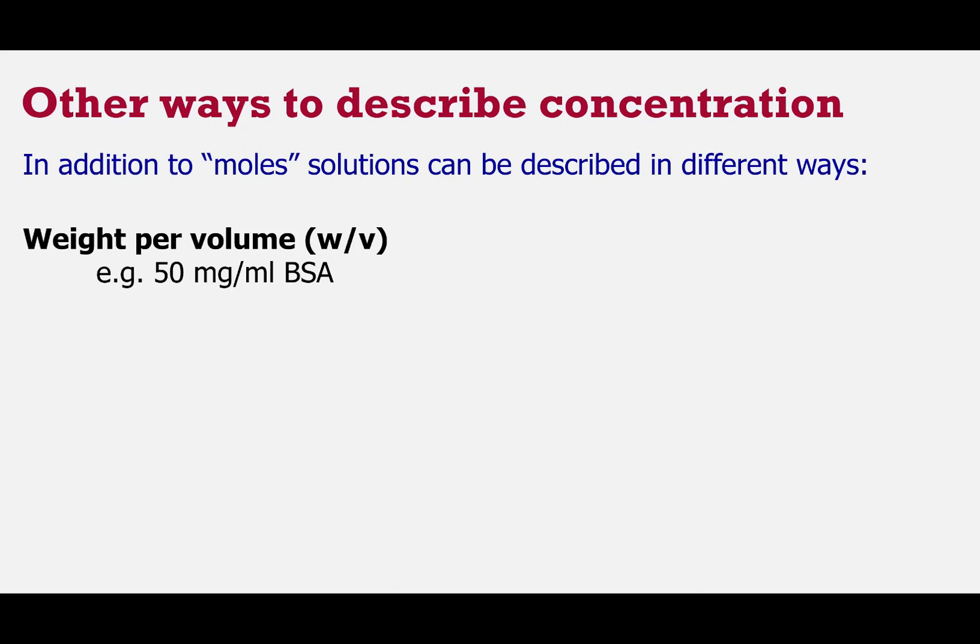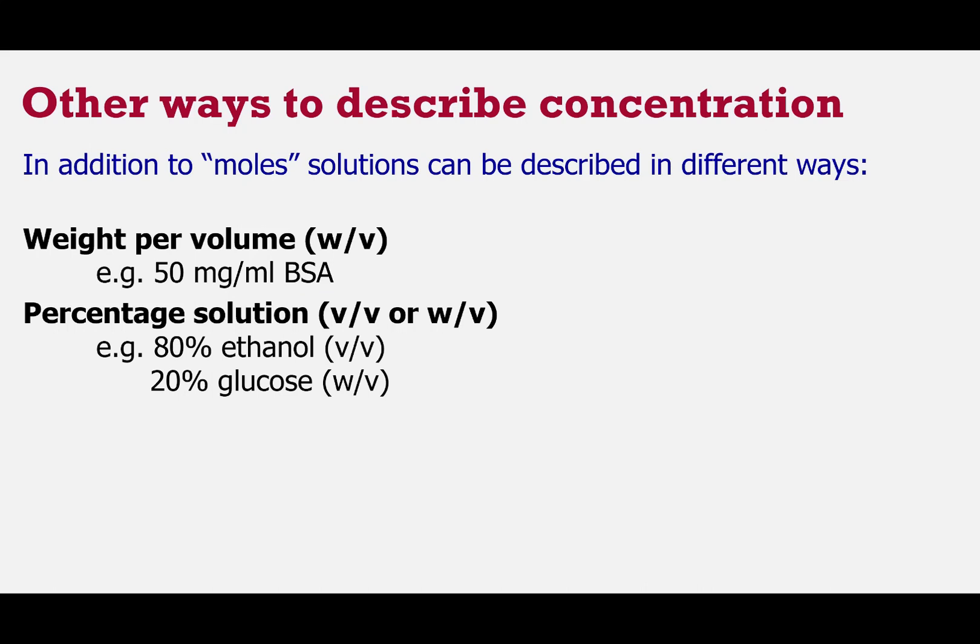Now just before we wrap up in terms of an introduction to units and powers, just to say that there is more than one way that we can describe concentration. We've been talking so far about having molar solution, and that's certainly one way which you'll be thinking about solutions, but there are other things as well. We can think about weight per volume, which is sometimes shown as W slash V, so for example if we had a solution of bovine serum albumin, it might be described as being 50 mg per ml. We also sometimes see a percentage solution, and this could be quoted as weight per volume but it might also be volume per volume. For example, if we're thinking about ethanol, which is a liquid already, we might describe a solution as being 80% ethanol V for V, or glucose, which started out as a solid, we might describe that as being 20% glucose W for V.